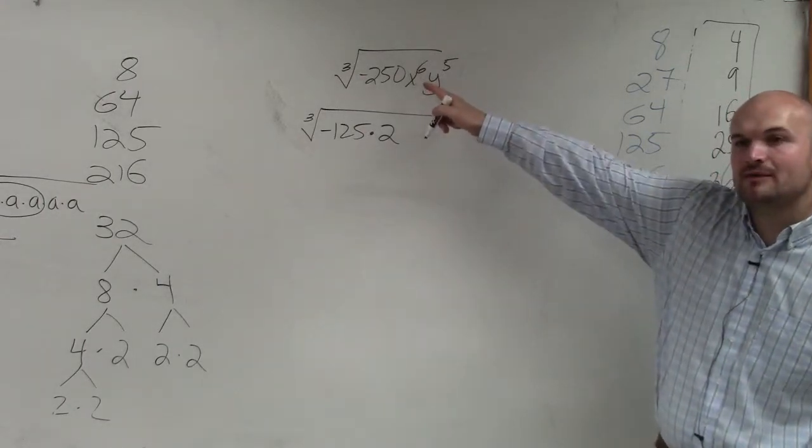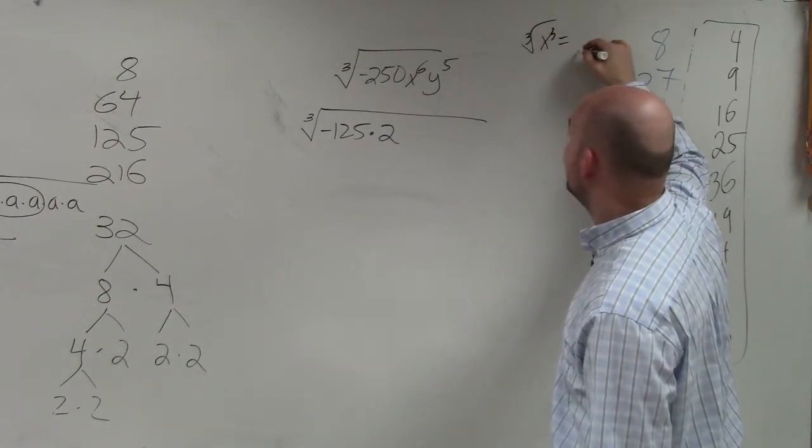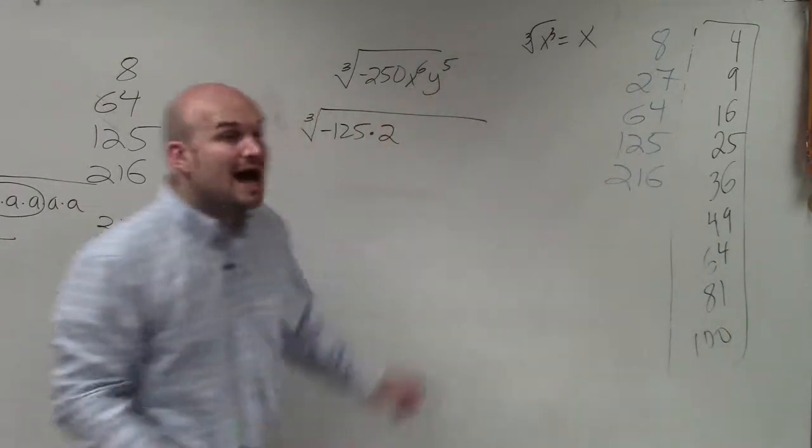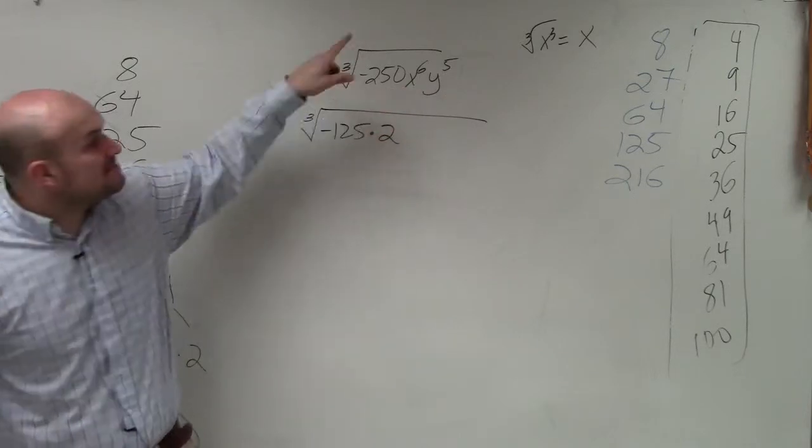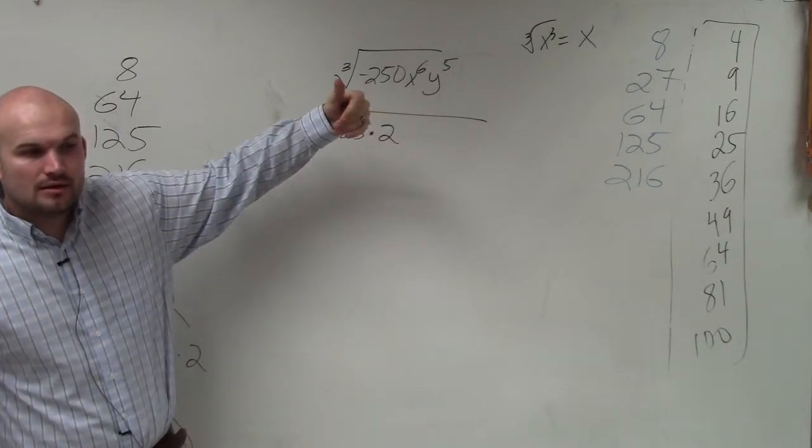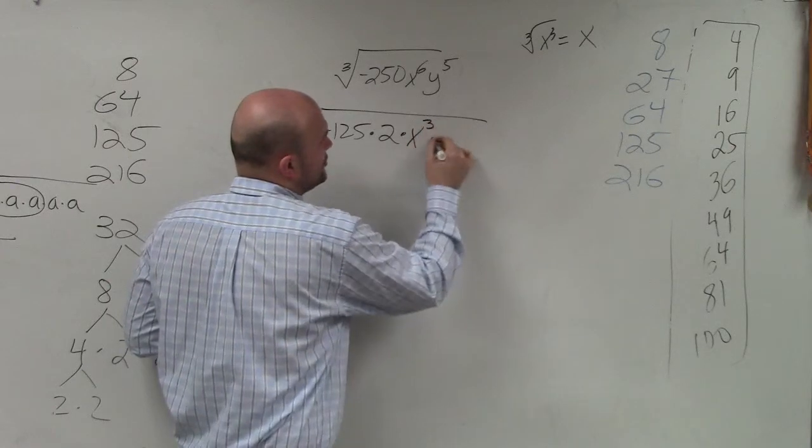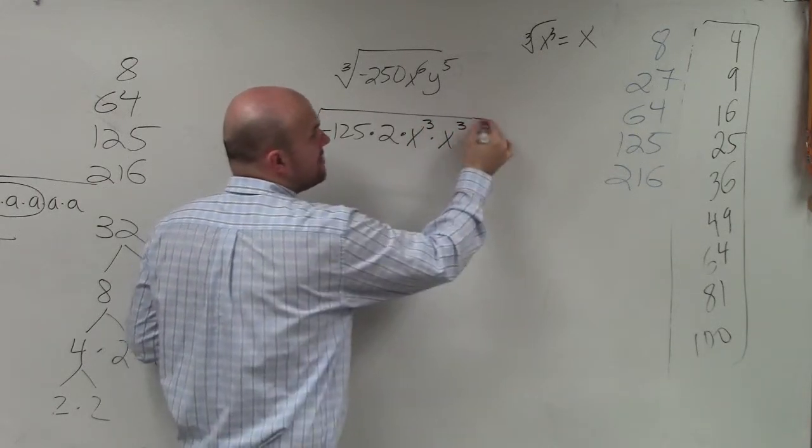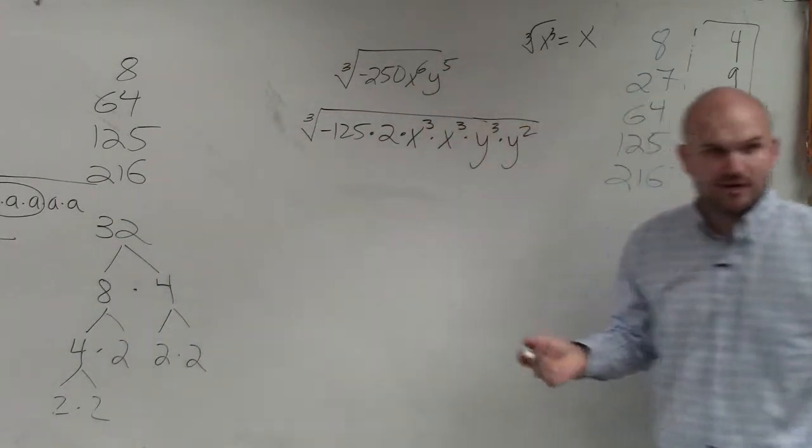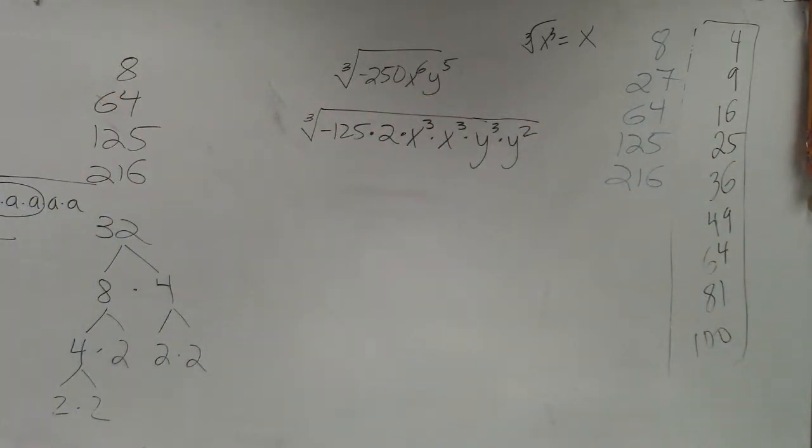Then, how do we simplify with the variables? Remember, the cube root of x cubed is just equal to x, right? So, I want to rewrite x to the 6th power as as many x cubes as possible. You guys agree? x squared. Yeah, that's very good. Well, I'm going to write it out, though, first. So it's going to be x cubed times x cubed. And then, y to the 5th is going to have to be written as y cubed times y squared. Does everybody agree with me? Does everybody see how I wrote that out? Because the more and more practice you get with this, the less and less work you have to do.